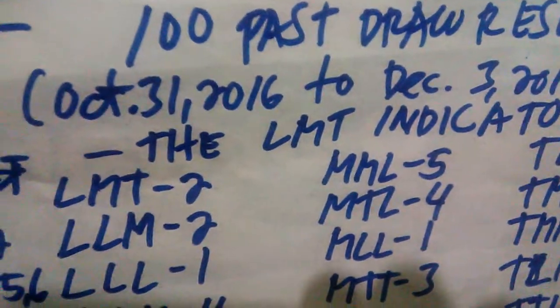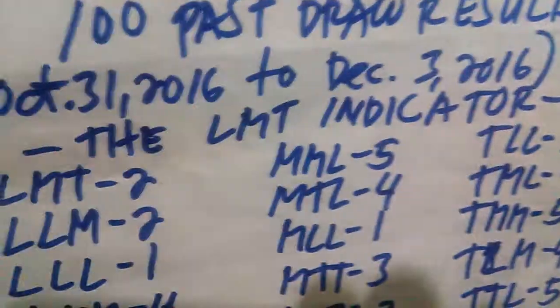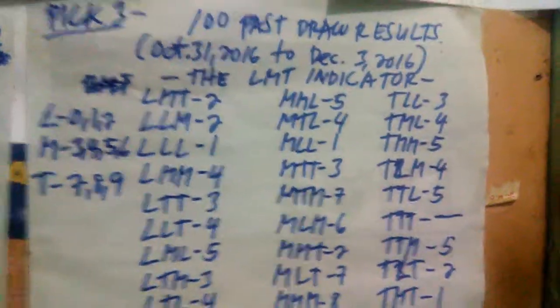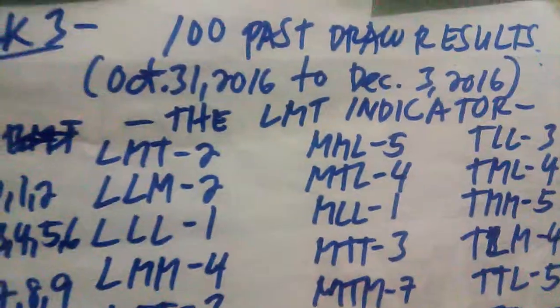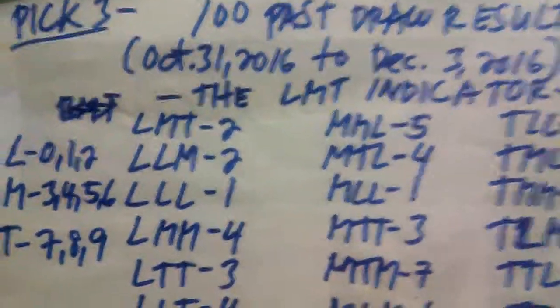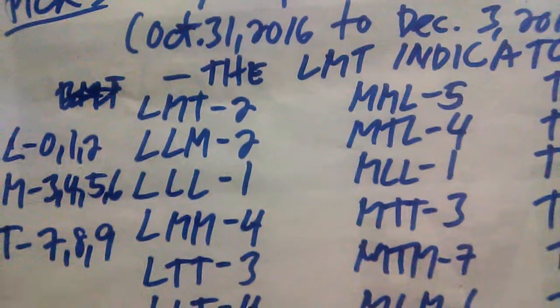The first tally sheet is what we call the LMT indicator, or the Low-Middle-Tap indicator. L stands for Low, which represents the numbers 0, 1, and 2. M stands for Middle, which refers to the numbers 3, 4, 5, and 6. T stands for Tap, which refers to the numbers 7, 8, and 9. So the combination LMT means the first digit is low, the second digit is middle, and the third digit is tap.